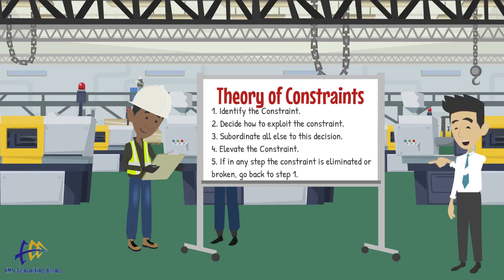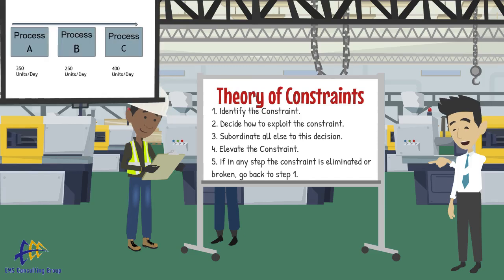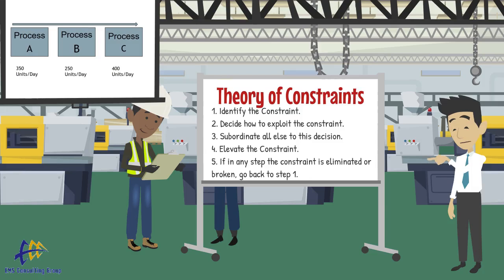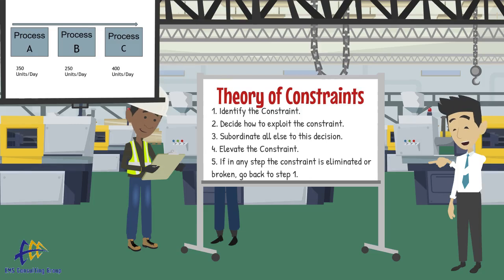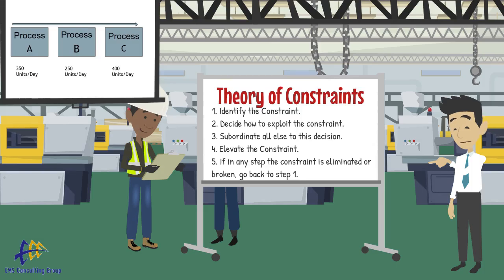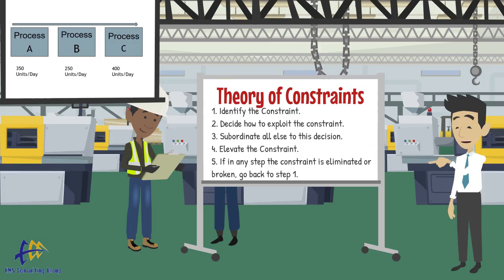Let's take a simple example. Let's suppose we have three production processes: A, B, and C. Customer demand is 300 units per day, and the units have to go through all three processes in order. Process A has a capacity of 350 units per day. Process B has a capacity of 250 units per day. And process C has a capacity of 400 units per day.